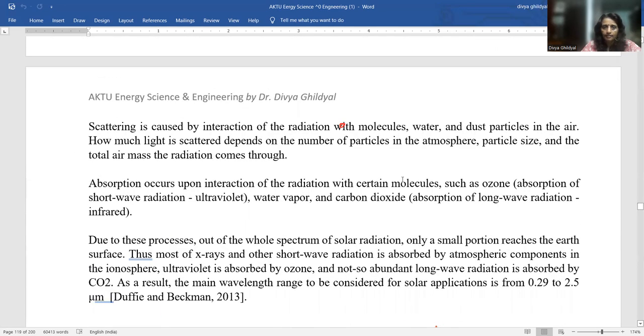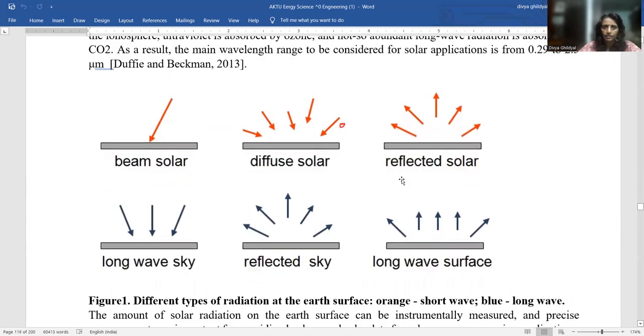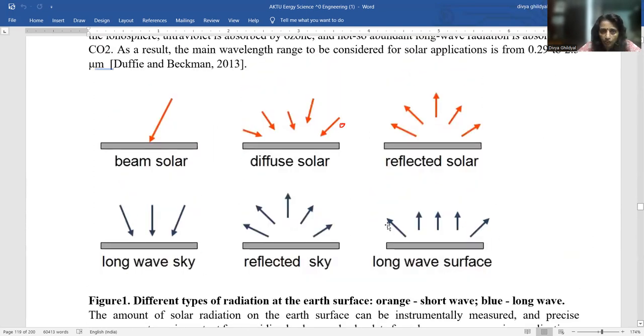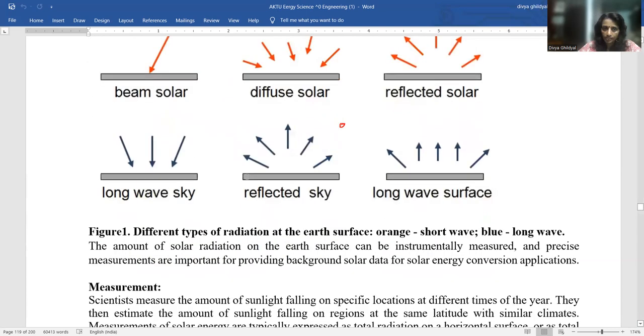The more they get, I think this diagram has also been asked in your AKTU exam. See, this is my direct radiation reaching, this is the diffused radiation, reflected ones, longer waves, reflected and longer skywaves. Different types of radiation at the earth's surface that really reach because this knowledge is very necessary before you go in for designing anything from the concept of solar energy.